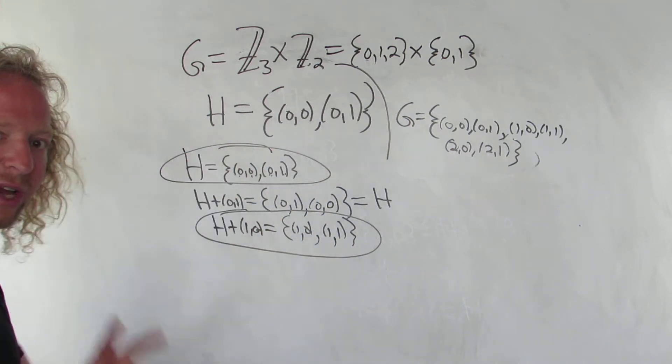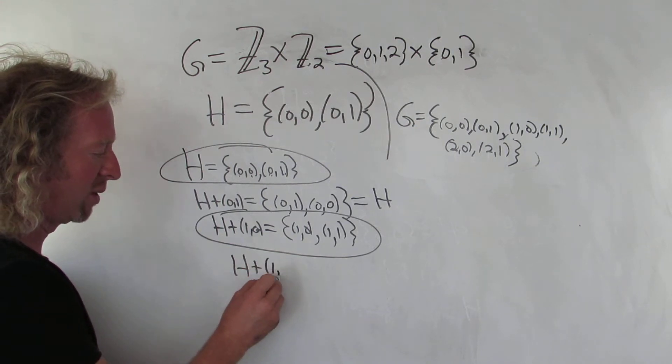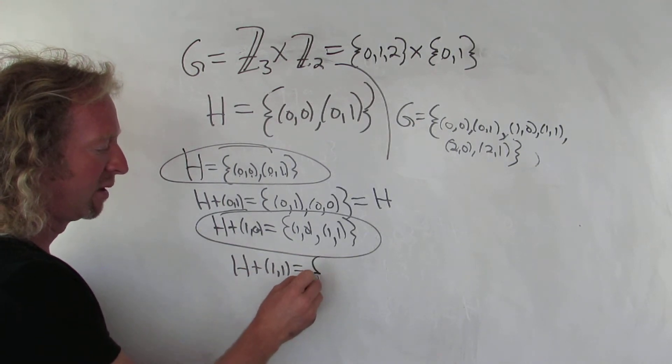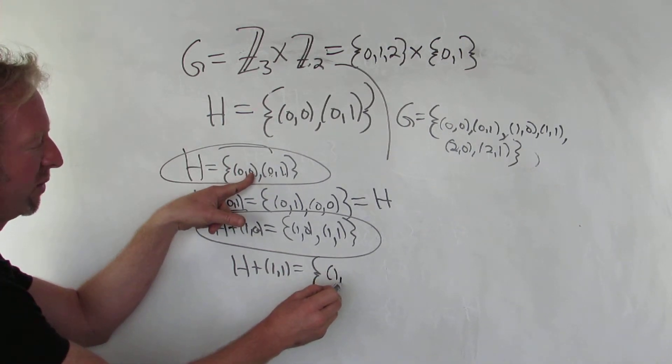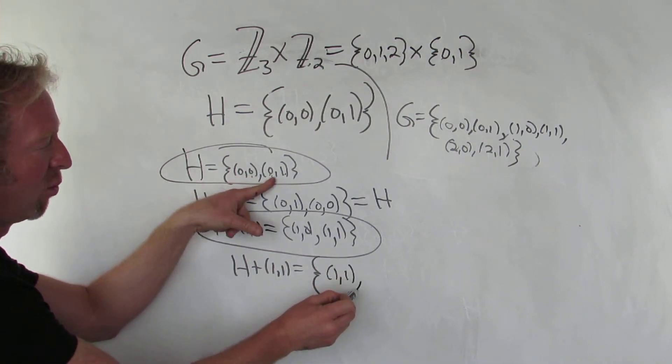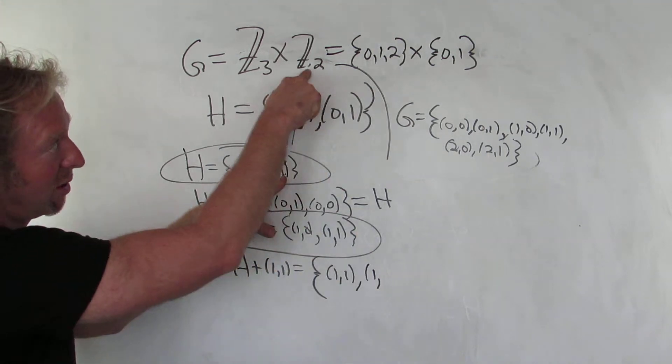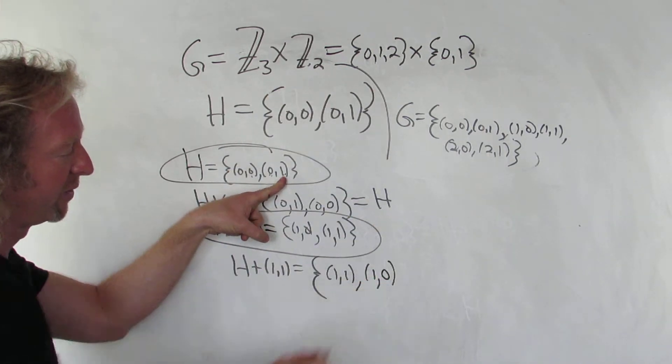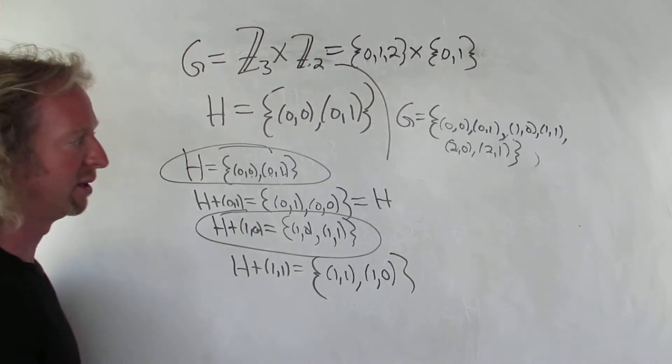So we've got 2 so far. Let's look at H plus (1,1). So H plus (1,1). So 1 plus 0 is 1, 1 plus 0 is 1, 1 plus 0 is 1, 1 plus 1 is 2, which is 0 because we're in Z2. So we get (1,1), (1,0). Exactly the same thing. So nothing new here.